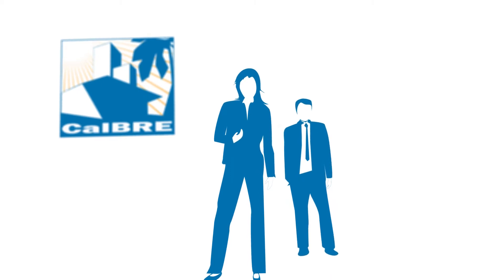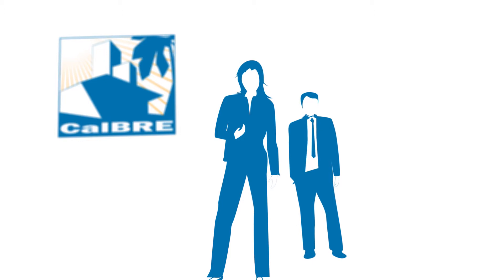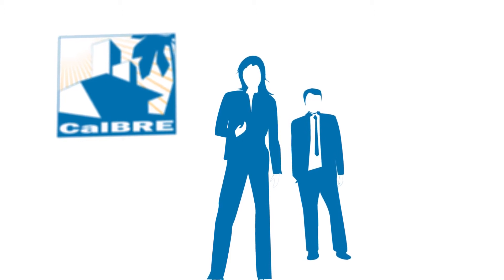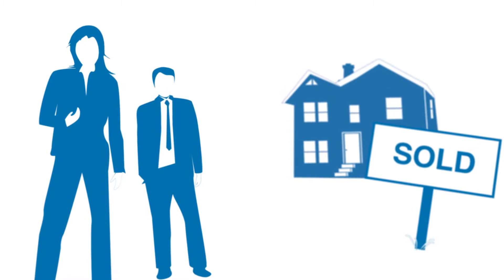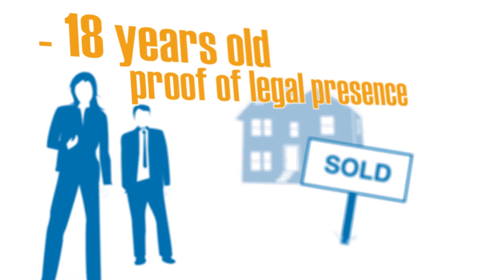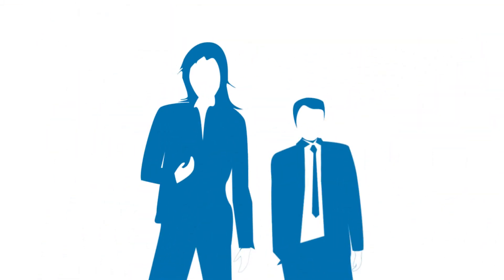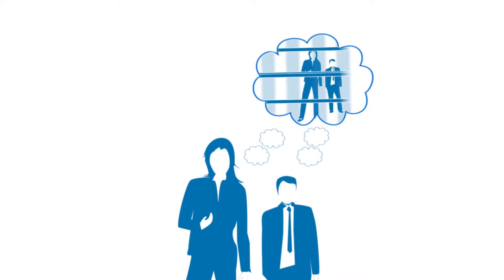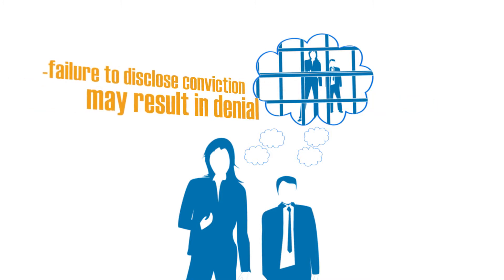Now that you're ready to apply for your California real estate salesperson license, here are some guidelines in order to complete the process. In order to obtain a salesperson license, you need to be at least 18 years of age, provide proof of legal presence in the United States, and be honest and truthful. Conviction of a crime or failure to disclose any criminal conviction or disciplinary action may result in the denial of a license.